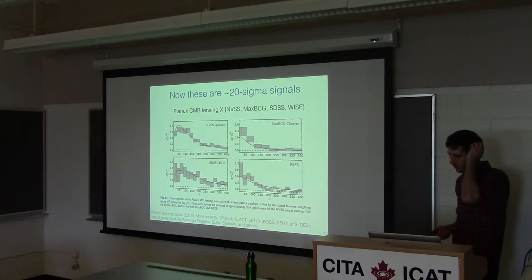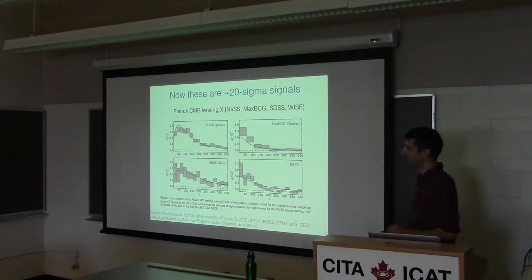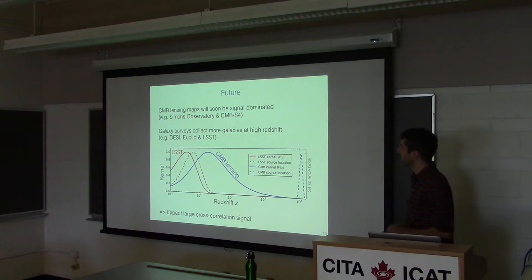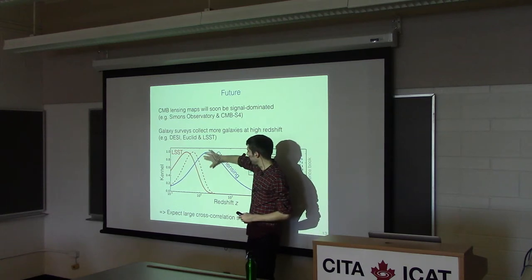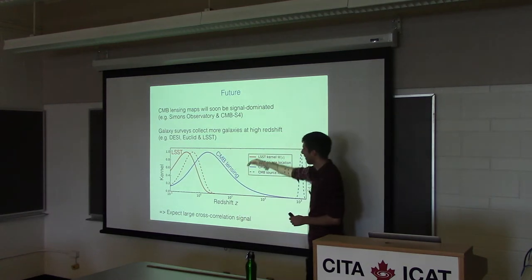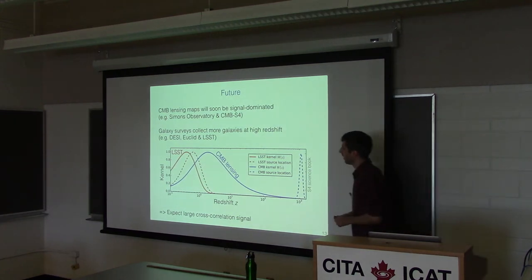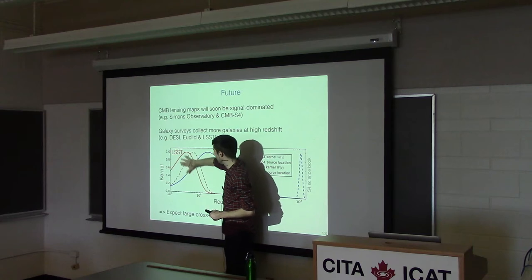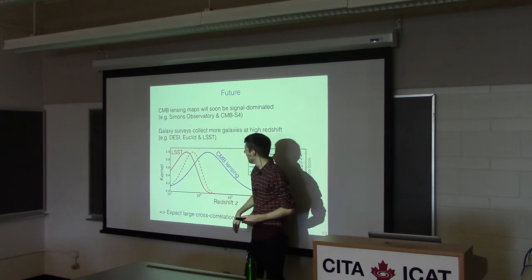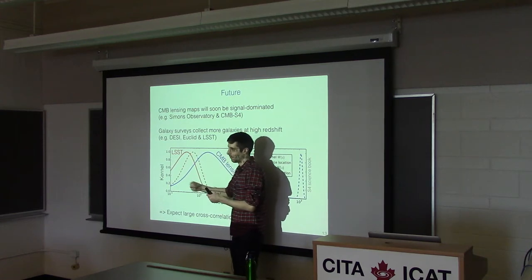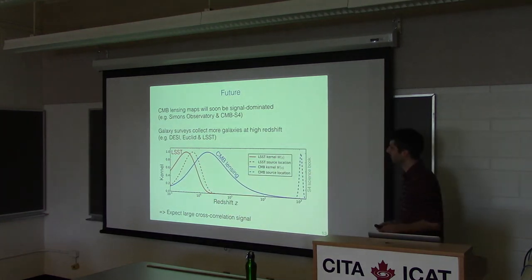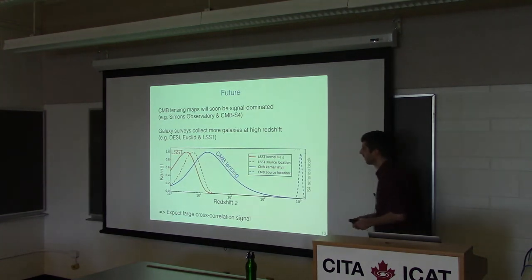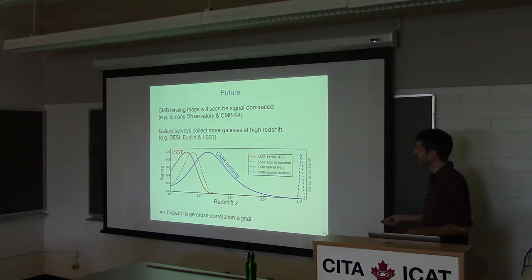What I'm going to talk about here is the prospects for the future — what we can hope for in maybe five or ten years. CMB lensing is mostly sensitive to redshift around 2, which is about half the distance to the CMB in physical units. Most current galaxy surveys observe a low-redshift regime, but future surveys can go deeper, filling the gap at higher redshift and seeing the same structures that cause the lensing of the CMB. We expect a large cross-correlation signal in the future.